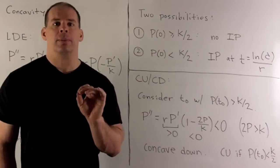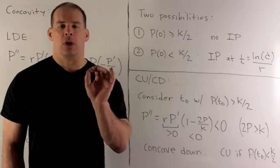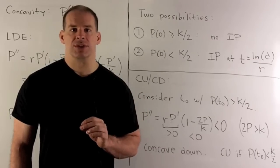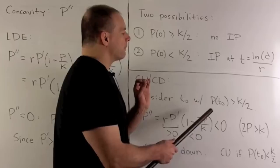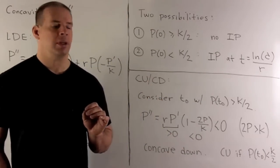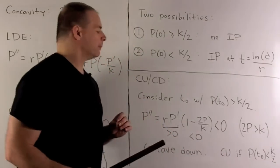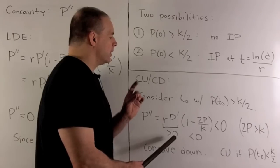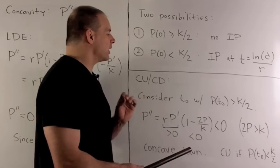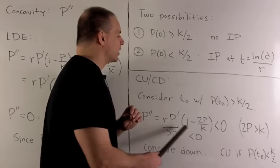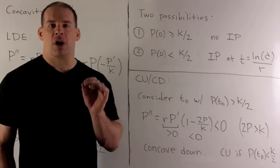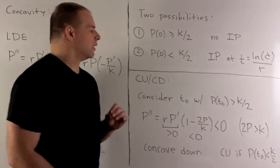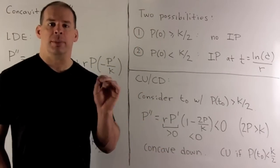Let's check out regions of concavity. The second derivative equals zero only when P equals K over 2. For points where our function is greater than K over 2, we have 2P greater than K, so the factor one minus 2P over K is negative, making the second derivative negative — meaning concave down. By the same argument, if the function is less than K over 2, we're concave up.